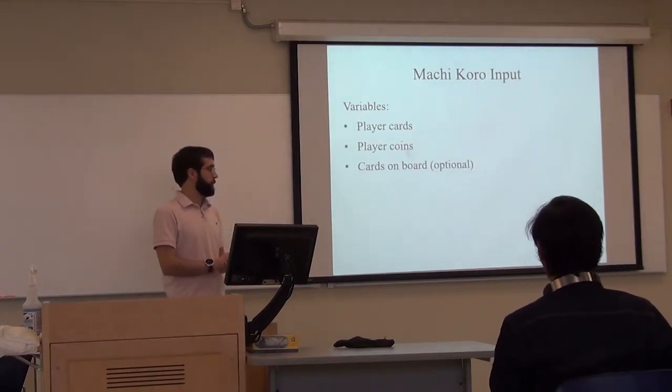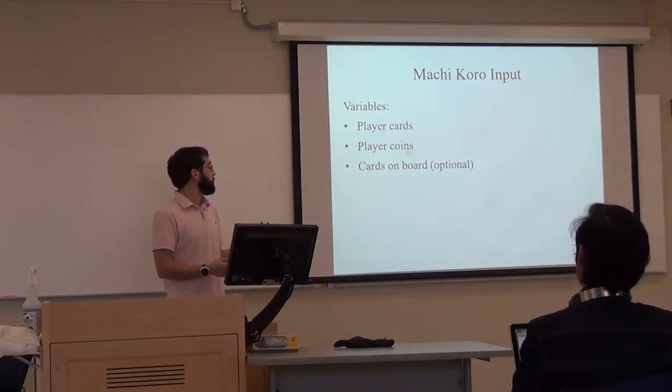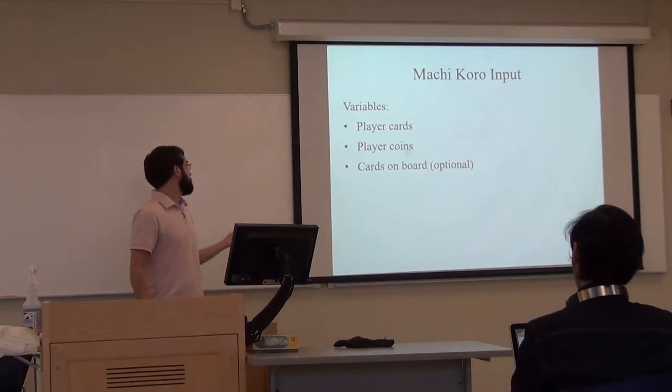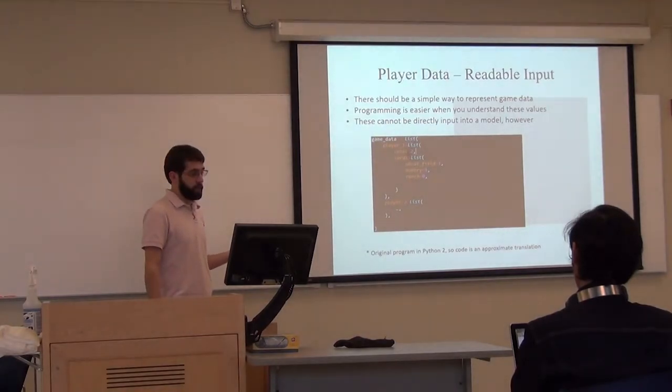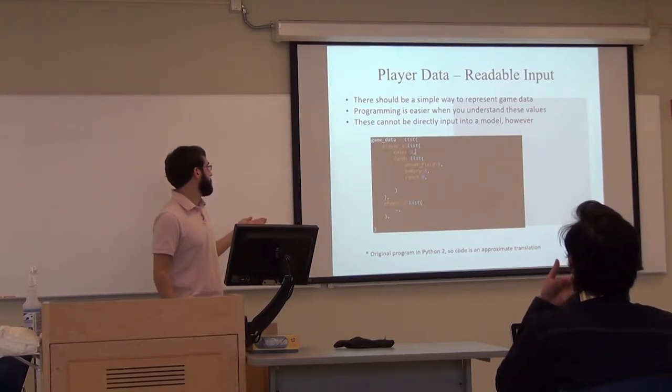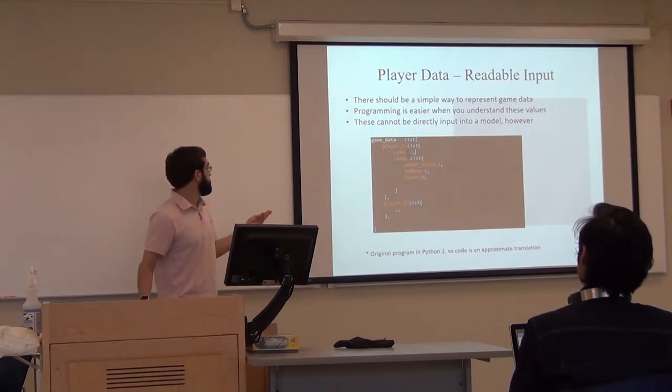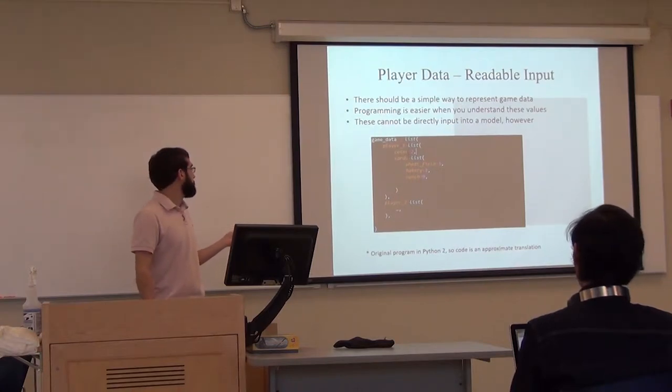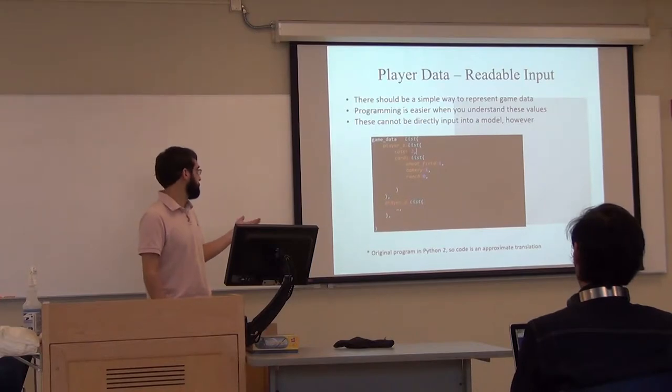For reinforcement learning, there are basically two main inputs I had. The cards the players had and the amount of coins they had. The cards on the board are also optional since all the information you need is from all the cards the players have, which is fixed in the game. For representing this data, I like to represent data in two ways. First is a way that's easy for a human to read. Here's some R code which corresponds to the Python code I used, where you have a list. This list contains some data for player one, which is its own list with coins. And then there's another list within that which has all the different cards. Same for player two, and I could write out player three and player four.